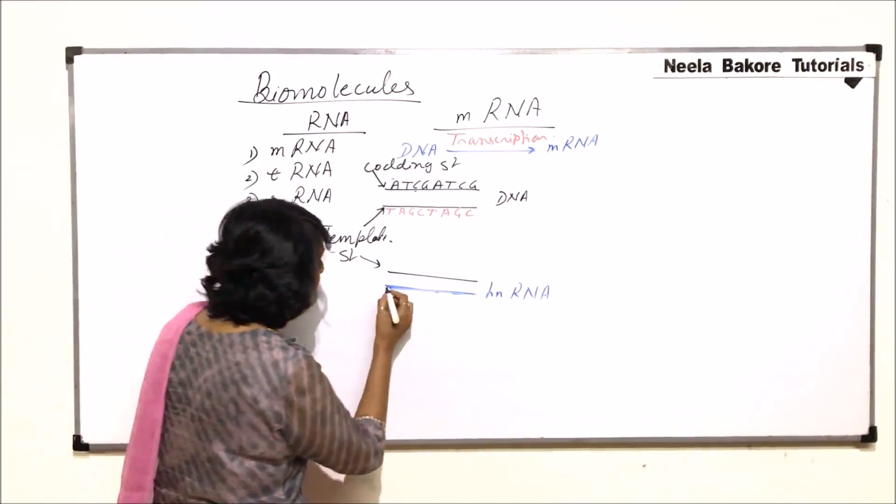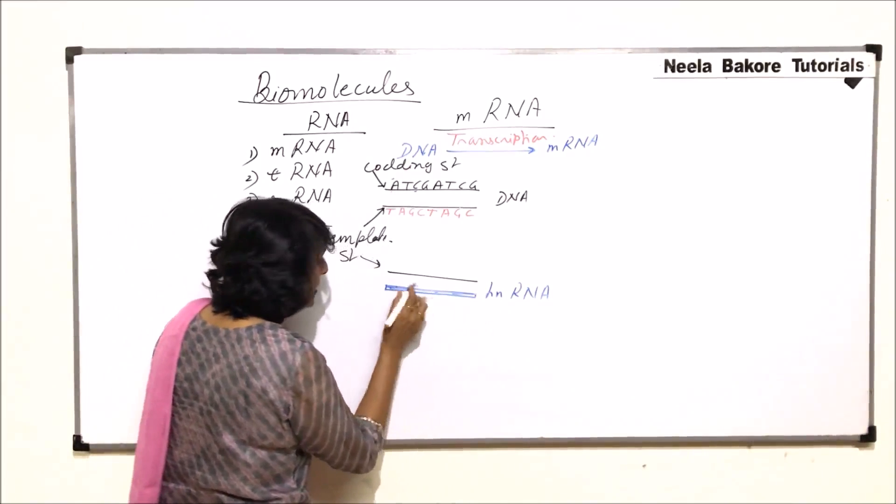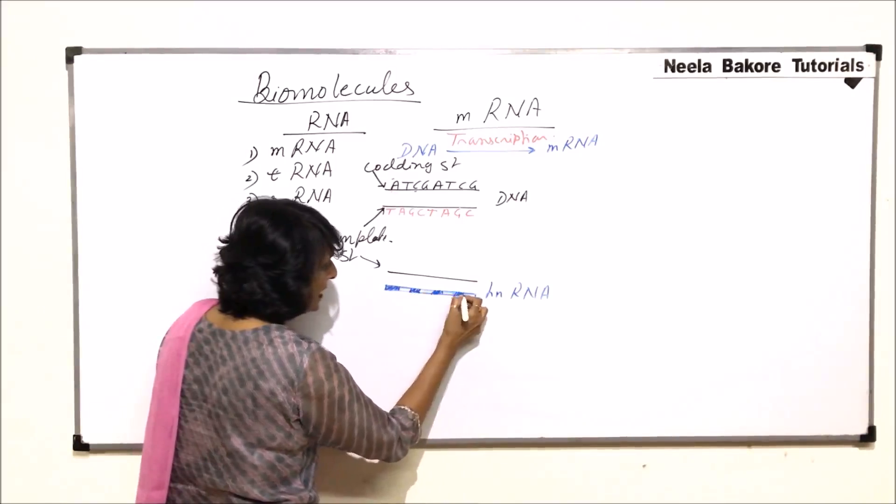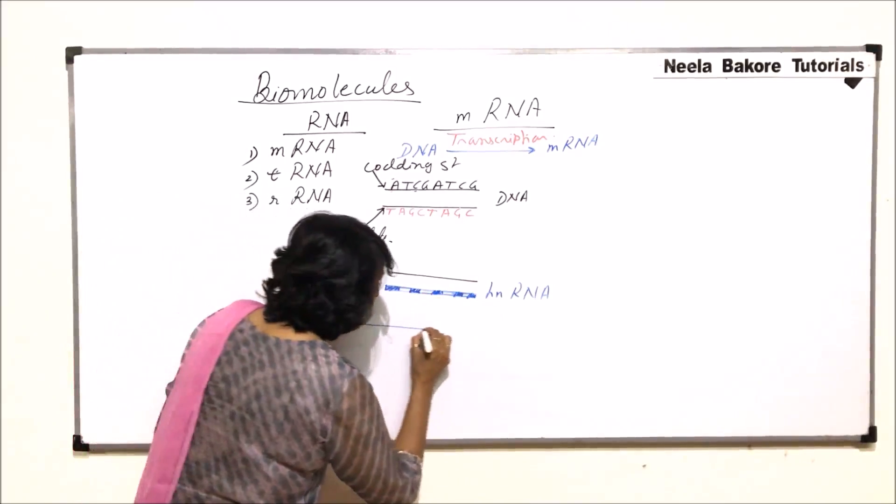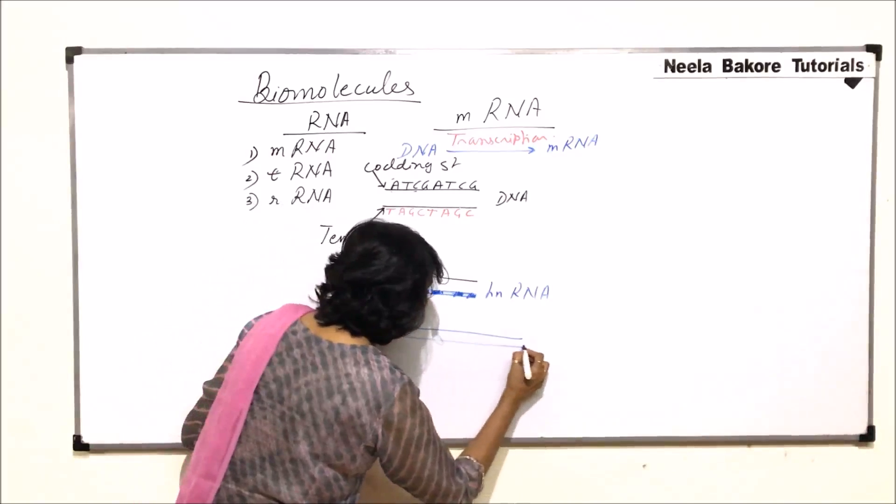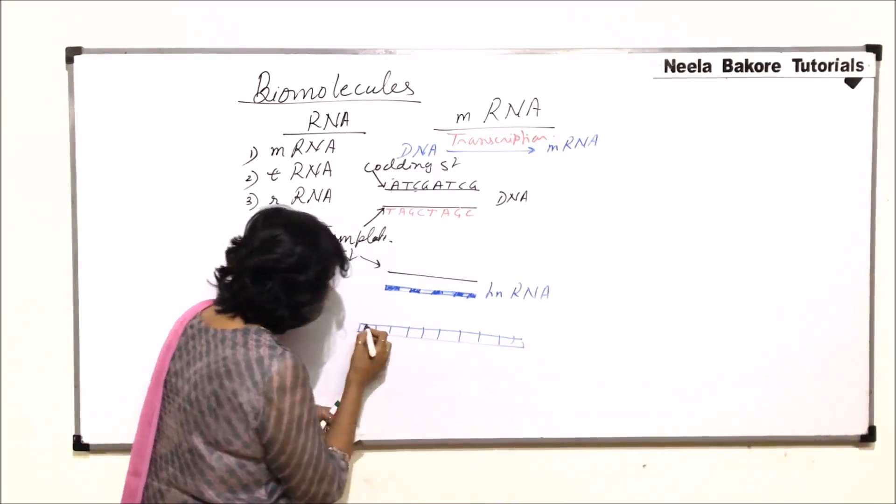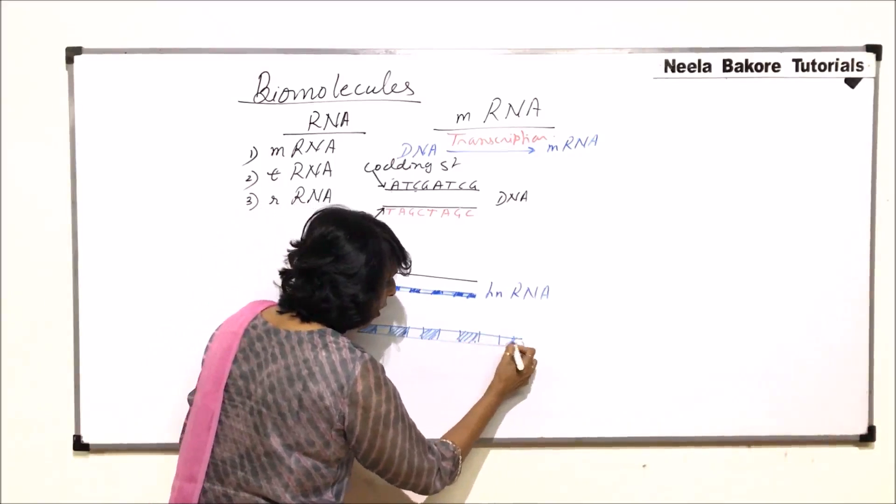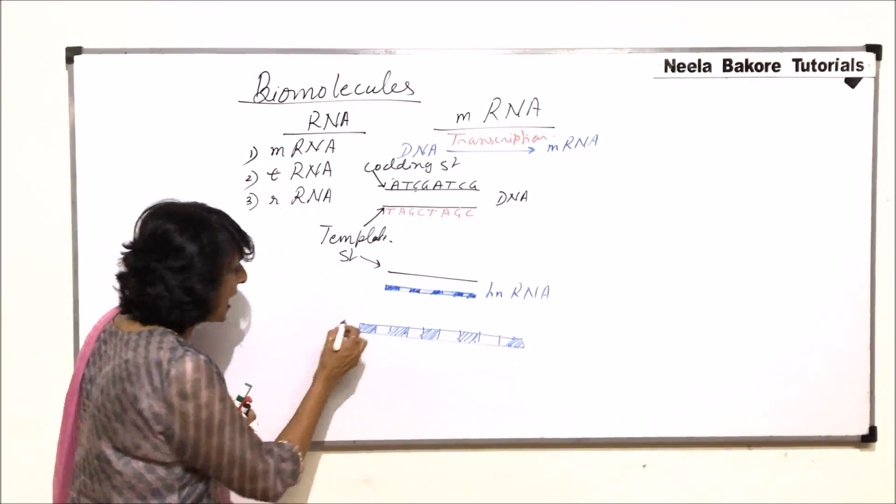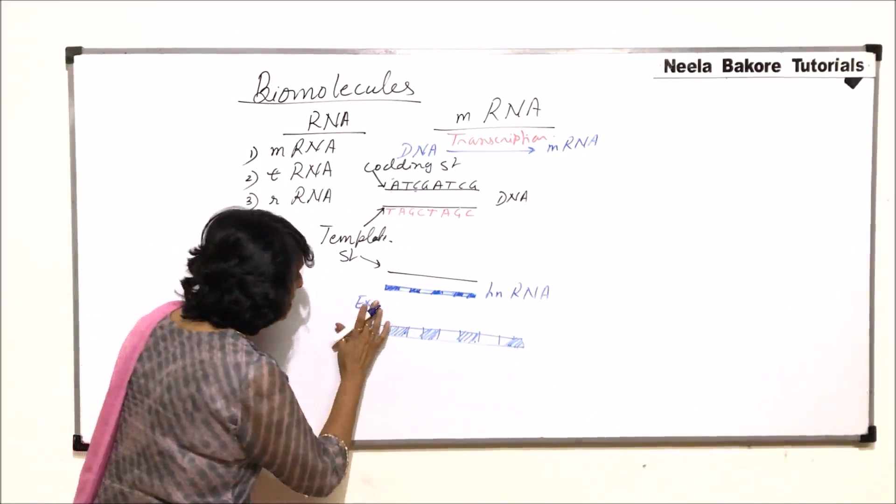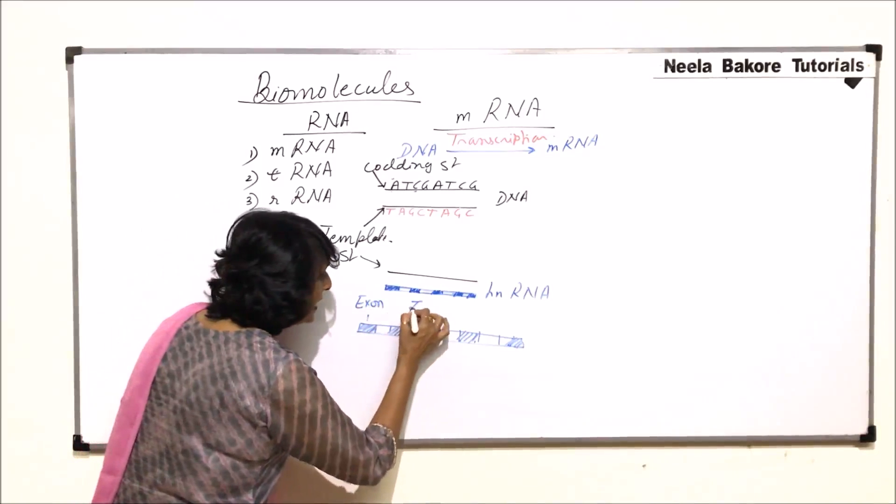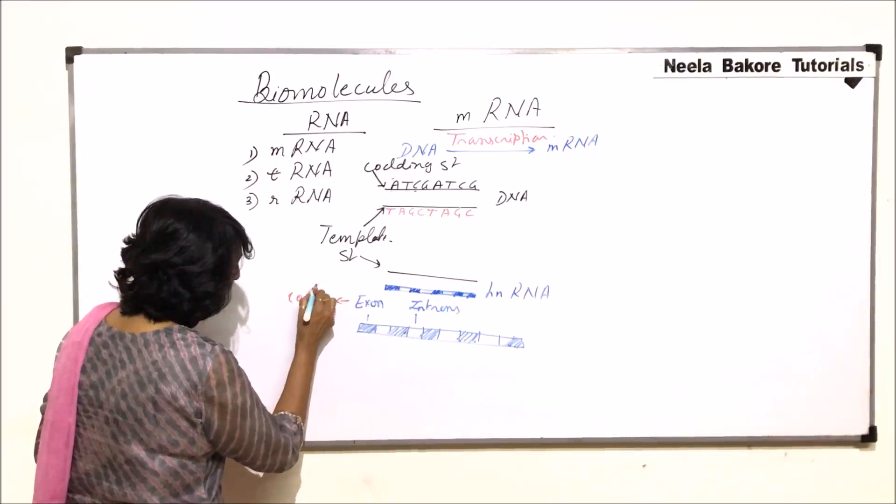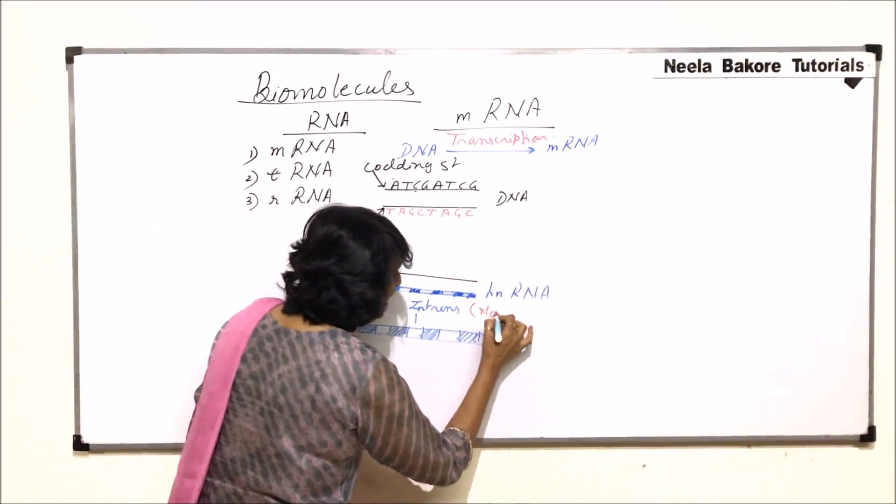Heteronuclear RNA or HnRNA has two parts. Certain parts are coding parts and certain parts are non-coding parts. So let me just enlarge this HnRNA. This is the HnRNA and here there are parts. These highlighted parts are the coding ones and the blank ones are the non-coding parts. The coding parts are known as exons and the non-coding ones are introns. Exons are coding parts. These are the coding parts and introns are non-coding.